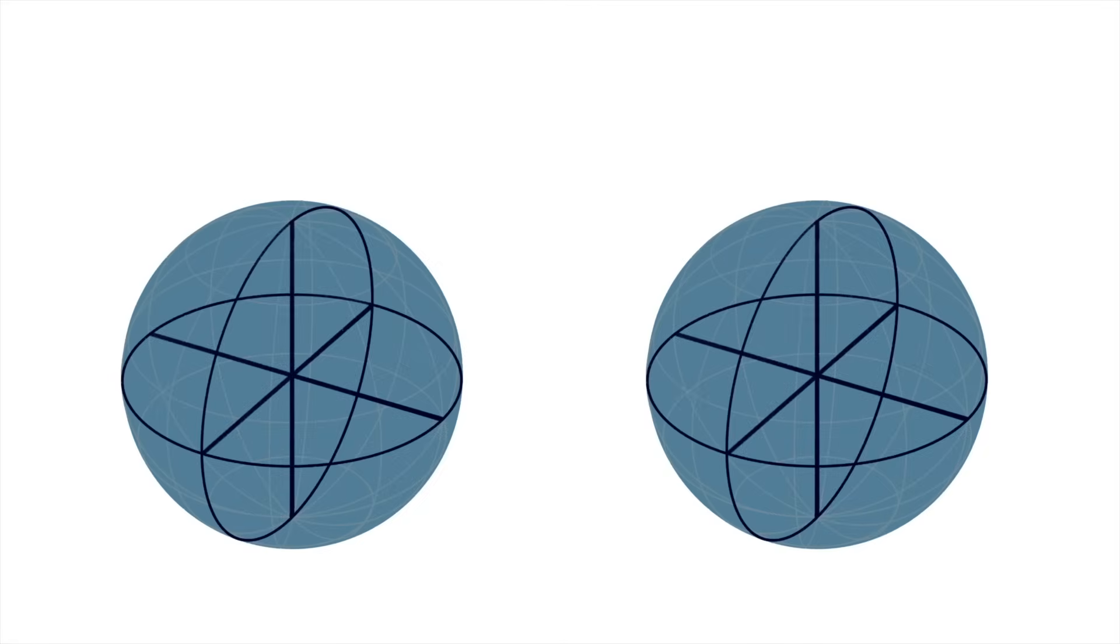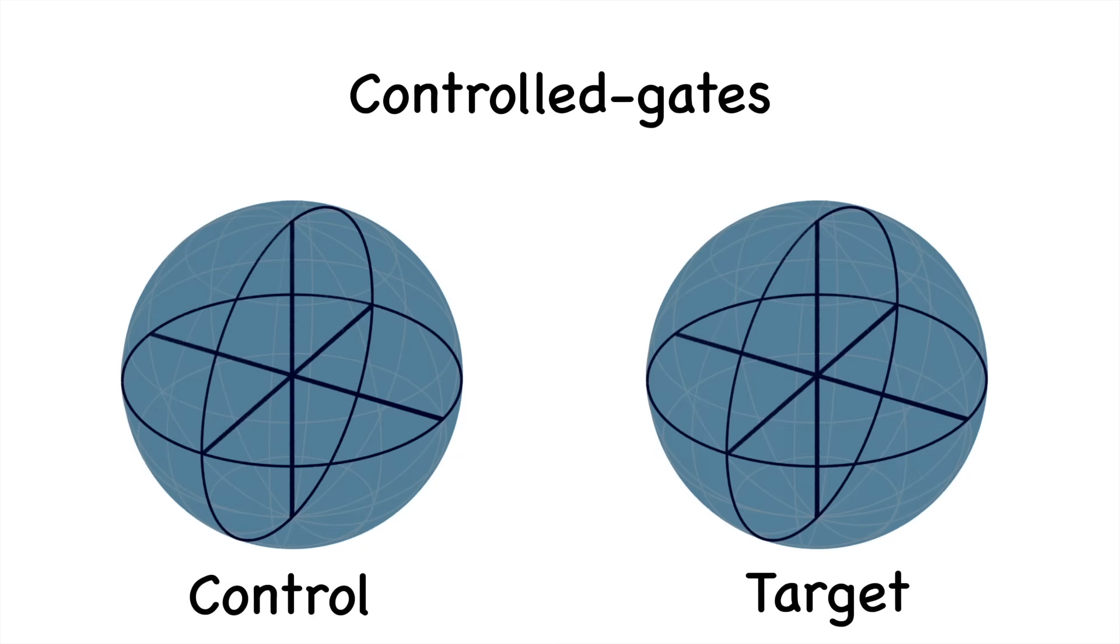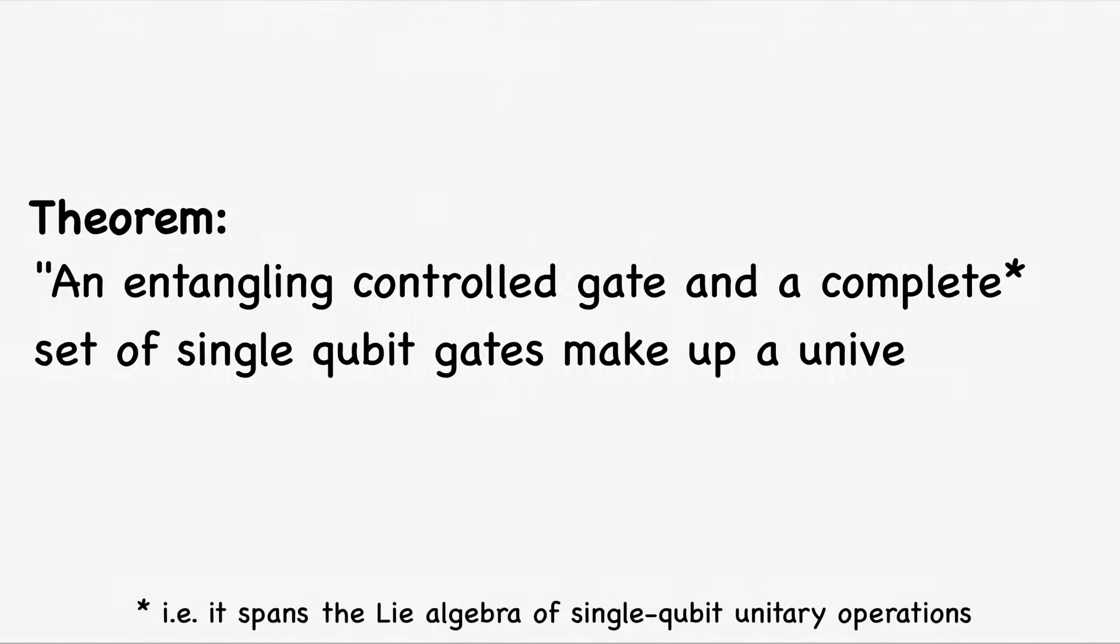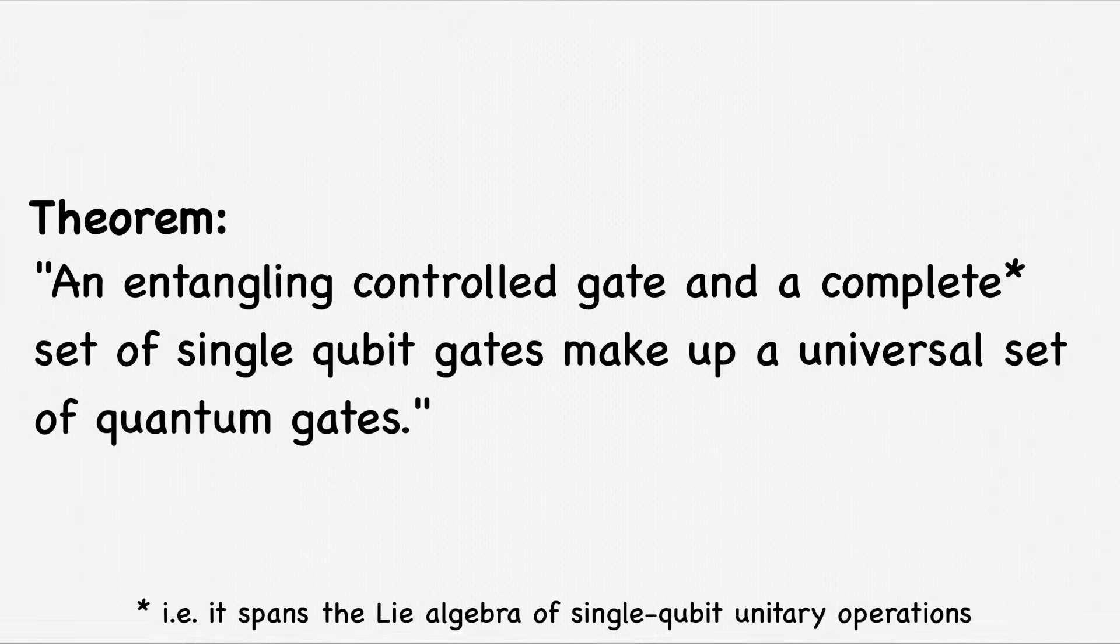However, neither of these approaches is universal in the sense that they suffice to perform an arbitrary computation. For this we also need the second type of gates, two qubit gates. These gates perform operations on two qubits simultaneously. The most important subgroup of them are controlled gates, that perform a certain operation on one qubit, called target, depending on the state of another qubit, called control. There is for example the controlled NOT gate, short C-NOT, which flips the target qubit only if the control qubit is in the one state and otherwise leaves it unchanged. An important theorem in quantum computing states that one control gate, like the C-NOT gate, together with any complete set of single qubit gates, such as the three continuous rotations, is in fact universal.